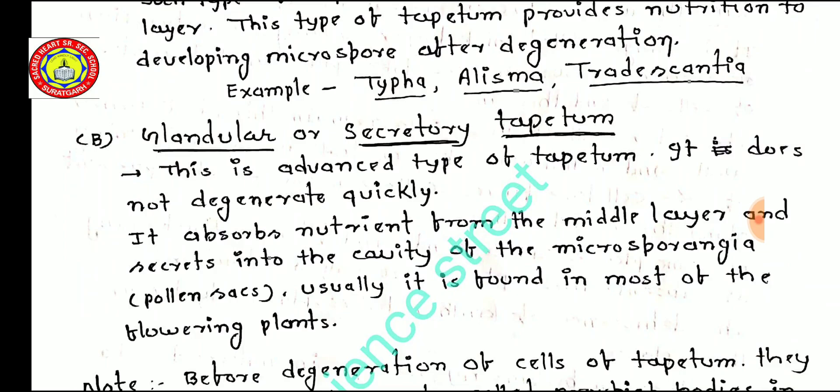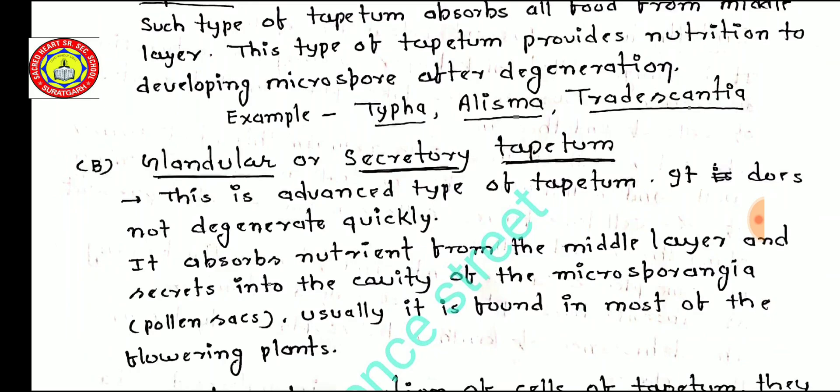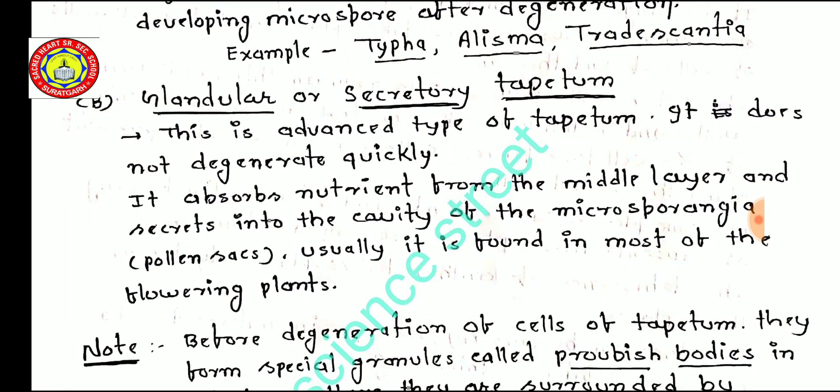The second type of tapetum is glandular or secretory tapetum. This is an advanced type of tapetum and does not degenerate quickly — unlike amoeboid tapetum, glandular tapetum is not degenerated quickly. It absorbs nutrients from the middle layer and secretes them into the cavity of the microsporangia, known as the pollen sac. It is found in most flowering plants.